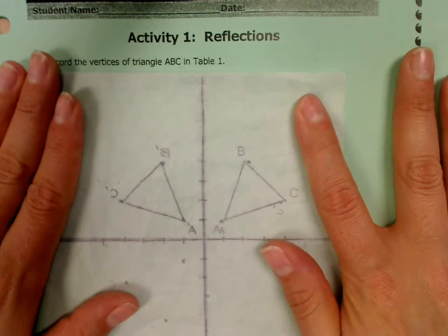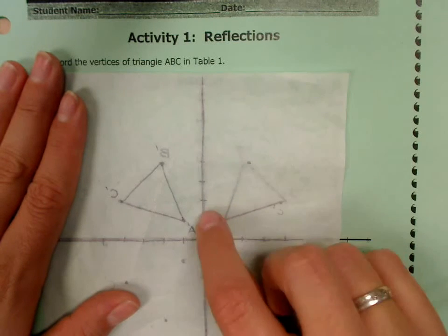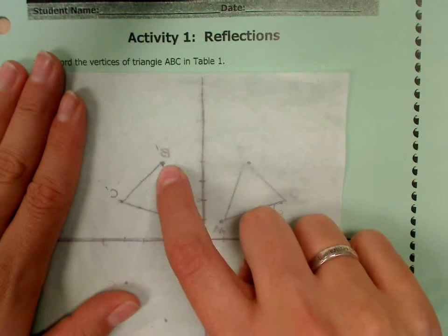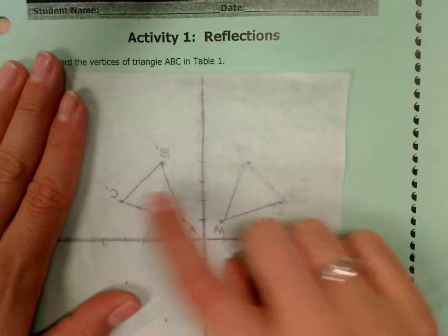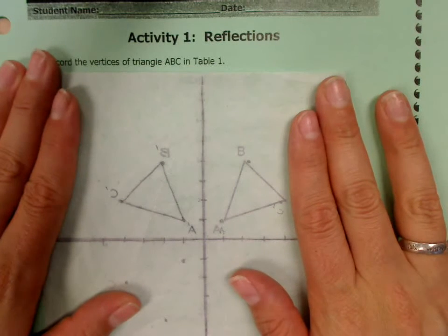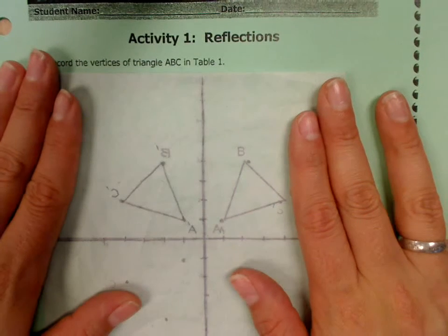And so for table one, you want to write down the new coordinates for these new points. Yes? Wouldn't the coordinates be the same, just put a negative for the point? Oh, maybe. Let's find out.